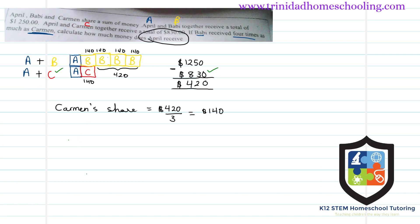Now let's find April's share. We know we have Carmen's share and we have the sum of April and Carmen. So let's rewrite this: April plus Carmen is equal to $830. April plus 140 is still equal to $830.